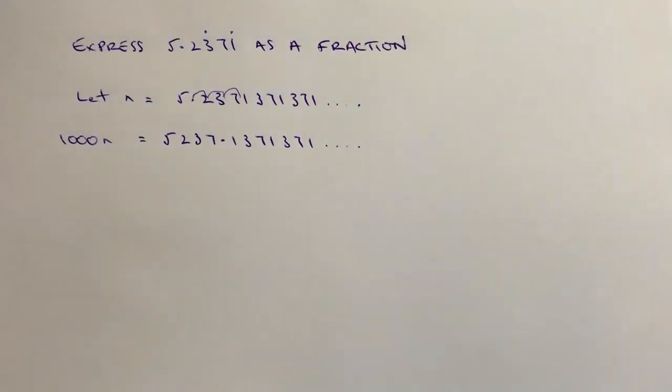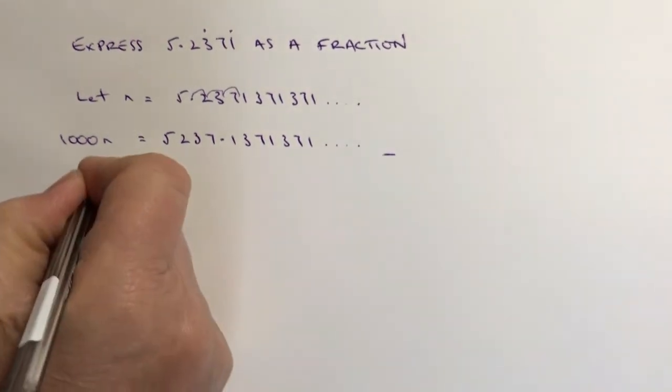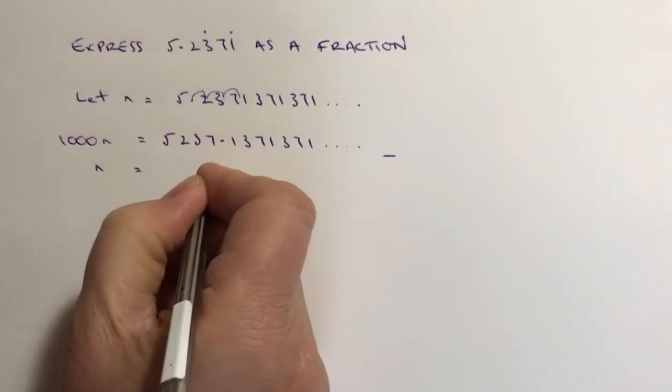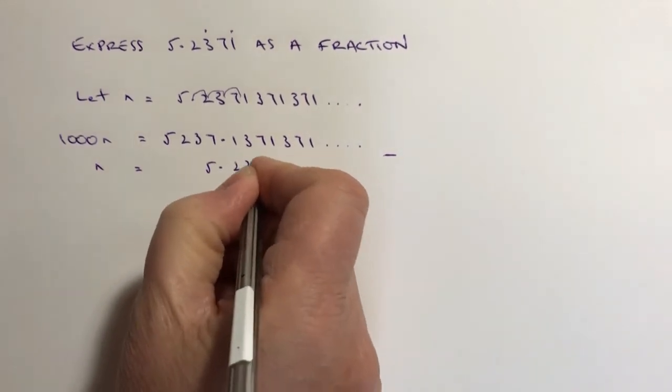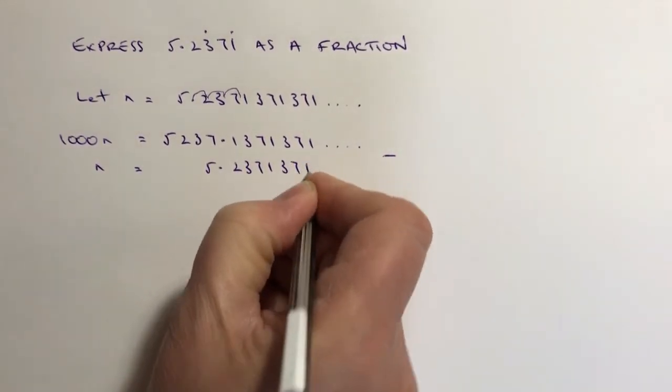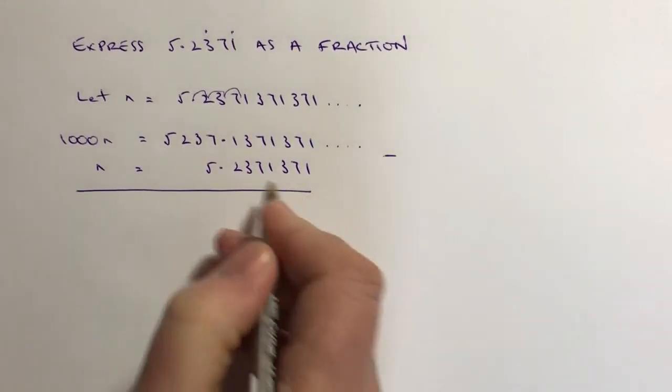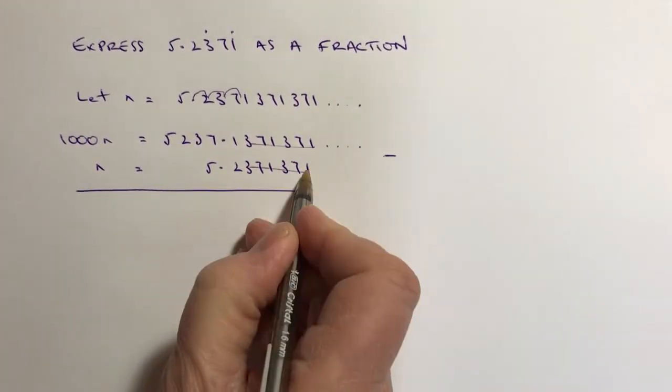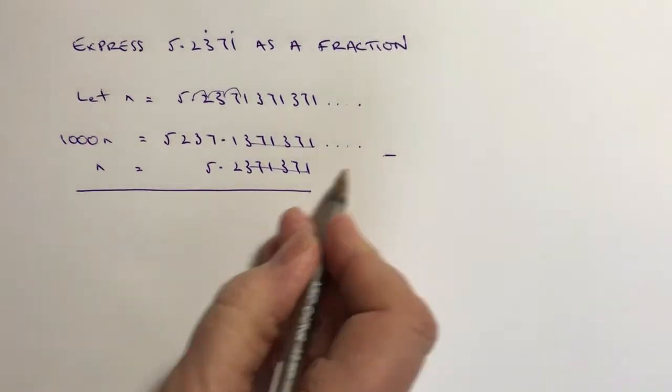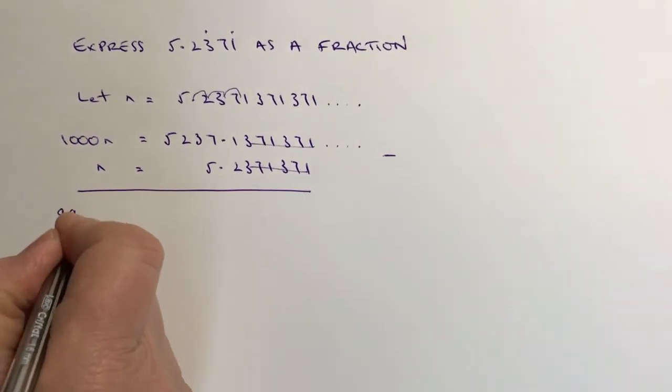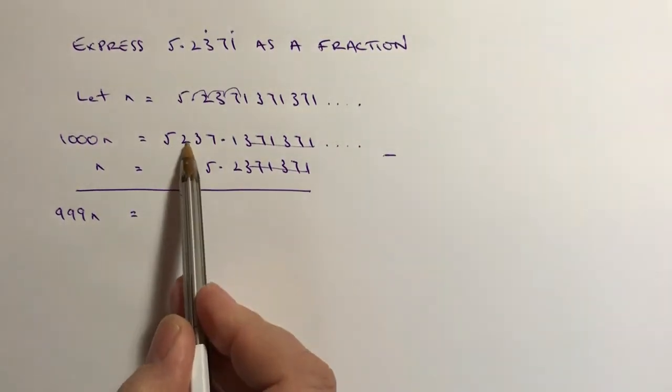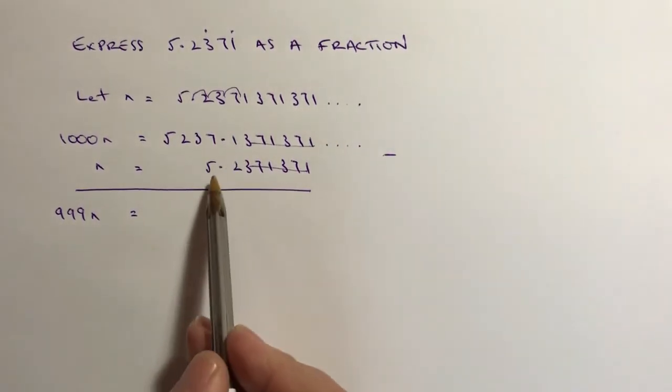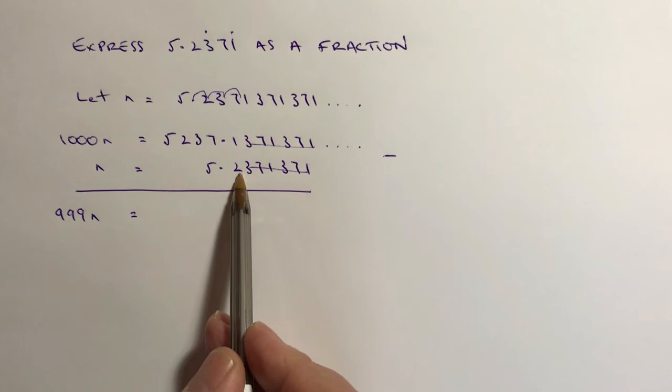Which means then if I take away the value of n, I end up with this kind of solution. So it allows me to take away the recurring element here. So I've got 1000n minus n is going to give me 999n and that equals 5237.1 take away 5.2.